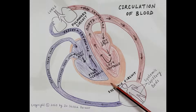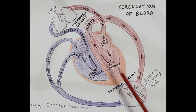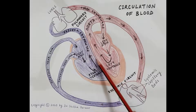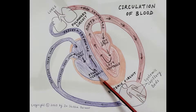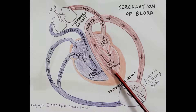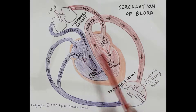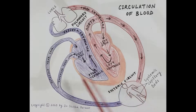This is the diagram of the heart. As we all know, the heart is a hollow muscular pump and the function of the heart is to supply blood to each and every cell of the body. The heart is divided into two parts by a septum — this is the septum — dividing it into the left part and the right part. Each part is further divided into two parts, so overall the heart has four chambers: right atria, left atria, right ventricle, and left ventricle.